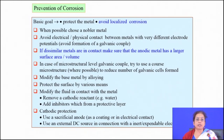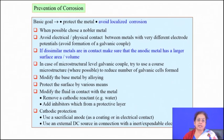In case of microstructure-level galvanic coupling, try to use a coarse or homogeneous microstructure with homogeneous composition, so there is no possibility of micro-galvanic cell formation, or if it is formed it is uniform throughout. Modify the base alloy by alloying, then protect the surface by various means like painting, alloying operations, or coating.